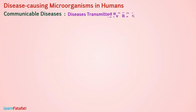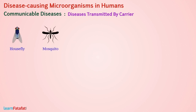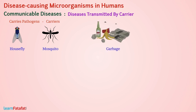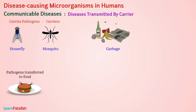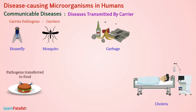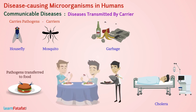Diseases transmitted by carriers. Organisms such as houseflies and mosquitoes, which carry pathogens, are called carriers. Pathogens present in garbage stick to the body of the housefly. When houseflies sit on uncovered food, pathogens get transferred to the food. So, it is advised to keep food covered and eat only covered food.